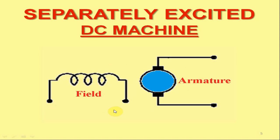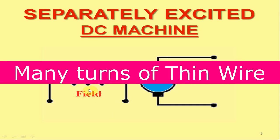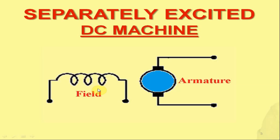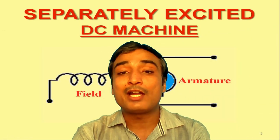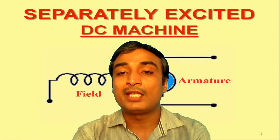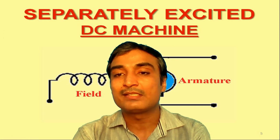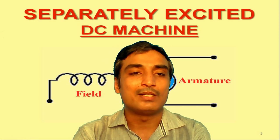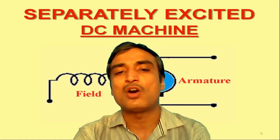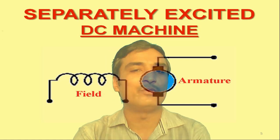This means the field and armature circuits are independent of each other. It is worth mentioning that the field winding of a separately excited DC machine comprises many turns of thin wire. Many turns implies a larger length of wire and thin wire implies a small cross-sectional area. Thus, we have a high resistance of the field winding.